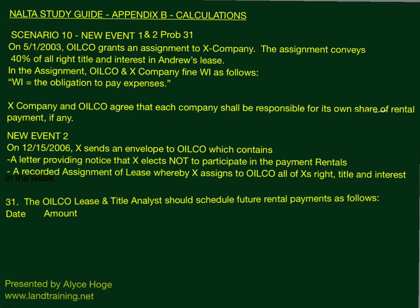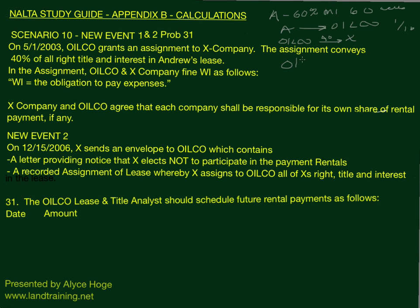Just to refresh your memory: Andrew had a 60% mineral interest in 60 acres, and Andrew leased that to Oilco for a 1/16th royalty. Oilco then assigned 40% to X company. So right now Oilco has a 20% working interest and X company has the 40% — the 40 and the 20 equal the 60% mineral interest.